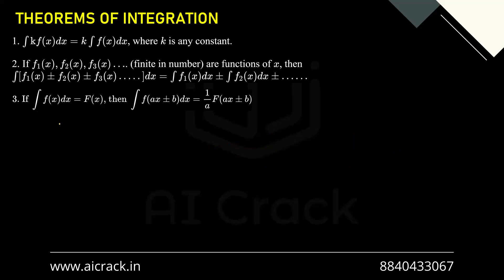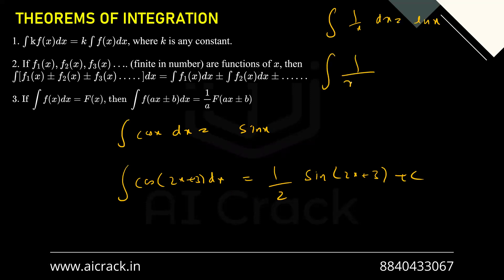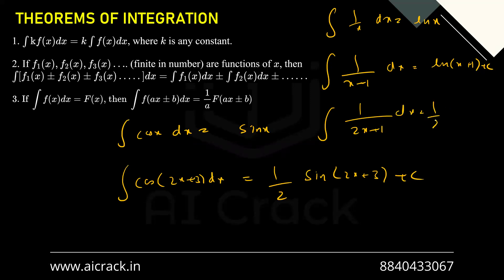The third and most important theorem: if integral f(x) dx = F(x), then integral f(ax ± b) dx = (1/a)·F(ax ± b) + c. For example, integral cos x dx = sin x, so integral cos(2x+3) dx = (1/2)·sin(2x+3) + c. Similarly, integral 1/x dx = ln x, so integral 1/(x+1) dx = ln|x+1| + c, and integral 1/(2x+1) dx = (1/2)·ln|2x+1| + c. This property is very important.